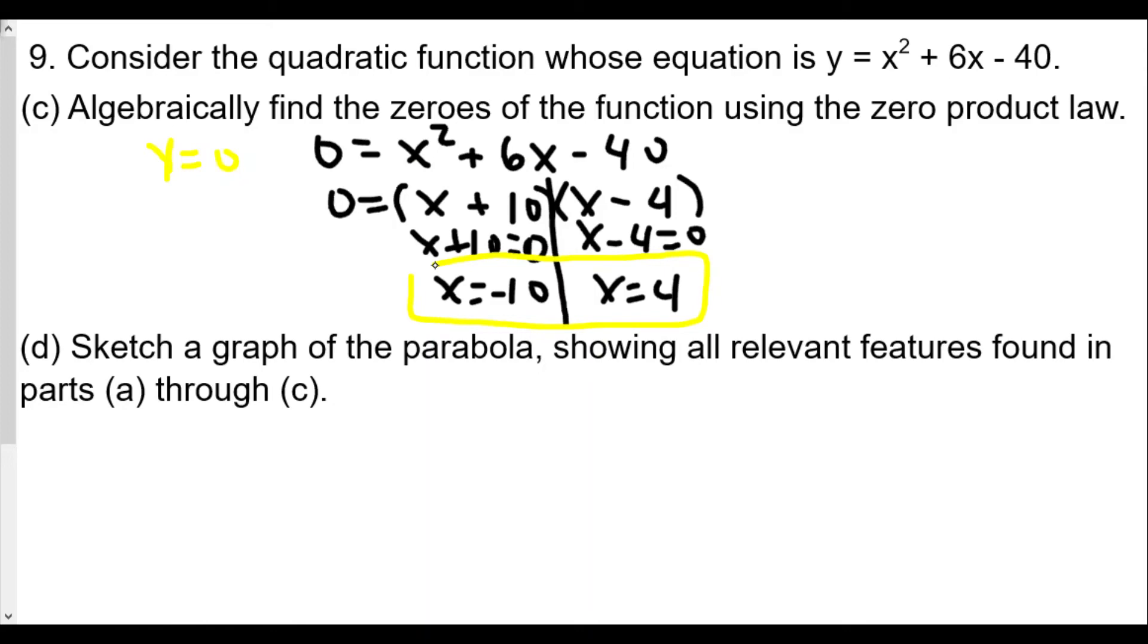Part (d) sketch a graph of the parabola showing all relevant features found in parts (a) through (c). We found the y-intercept in part (a) to be 0 comma negative 40. We found our vertex to be negative 3 comma negative 49. And we found the roots, the zeros, to be negative 10 comma 0 and 4 comma 0.